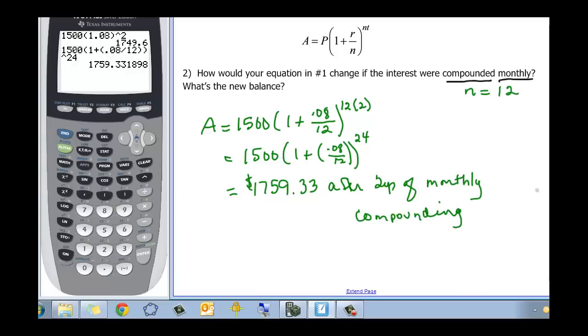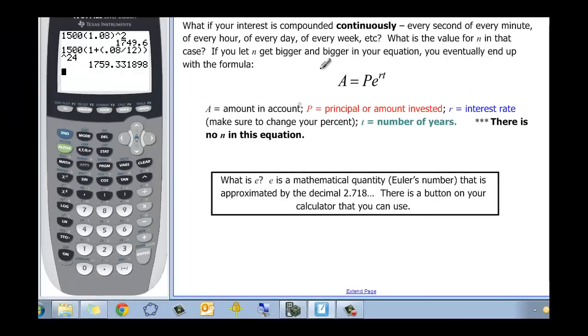We need to talk about the last type, which is continuous compounding. That means every second of every minute of every hour of every day of every week and so on, forever is always compounding. In our case then, N isn't going to be something that we can put a number to because it's always happening. And if you let N get bigger and bigger and bigger, you eventually end up with this formula.